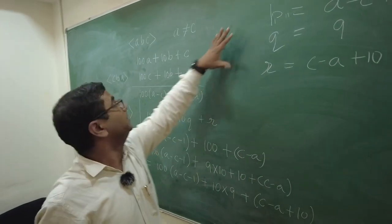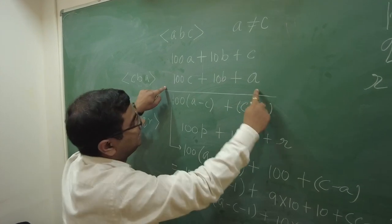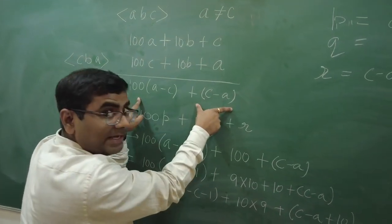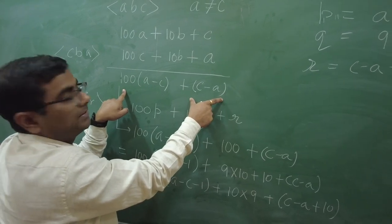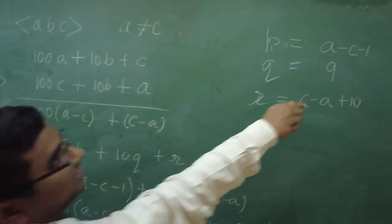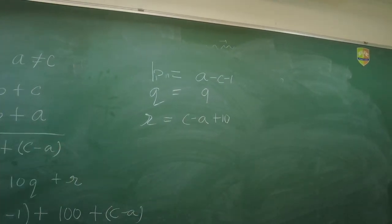Now, this was our third number. If you remember, the first number was the original number. Then, we reversed the digits. Then, we took the difference. Now, this 100 A minus C plus C minus A was our third number. Isn't it? And, for that, we have got the digits of that number, which is P equals A minus C minus 1. Q equals 9. And, R is C minus A plus 10.